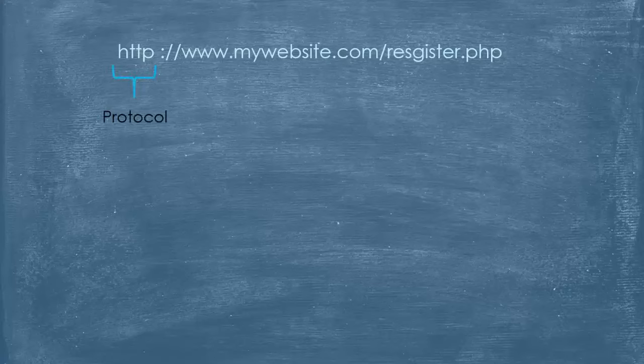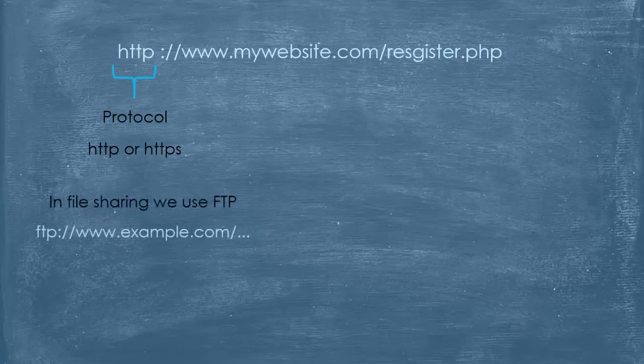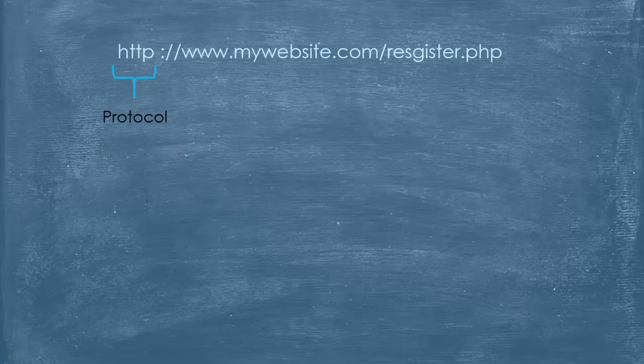The first part is the protocol we're using, which is of course HTTP or HTTPS if we are looking for resources on the web. We can use different protocols — for example, if we want to share files on the internet, we use the FTP protocol. The second part is the domain.